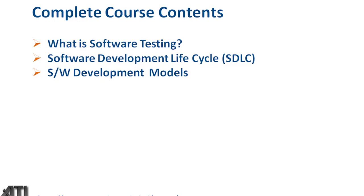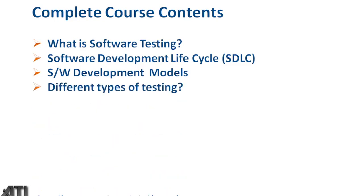For the development life cycle we need to follow certain development models. We'll talk about different development models like the waterfall model, which is the old one, the spiral model, and the agile methodology, which is used nowadays. We'll discuss agile in detail. We also have different types of testing, and I'll talk about unit testing and techniques in detail.